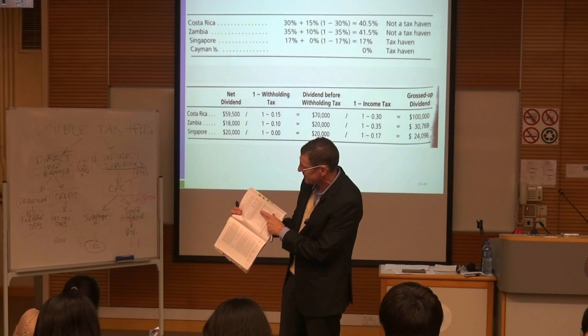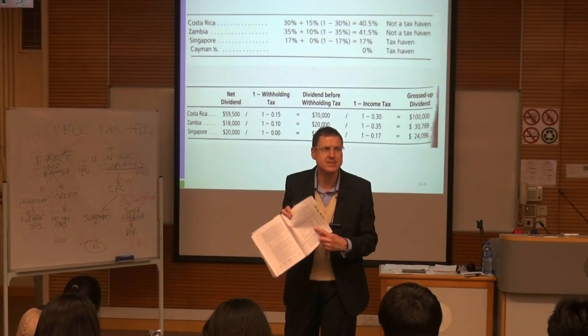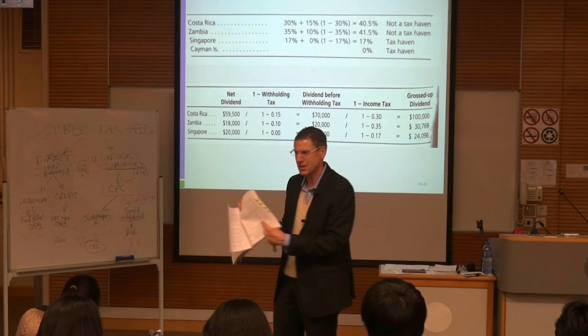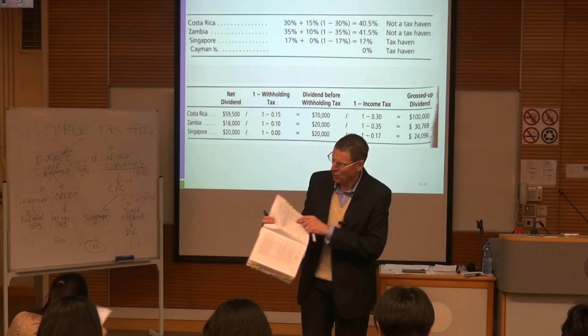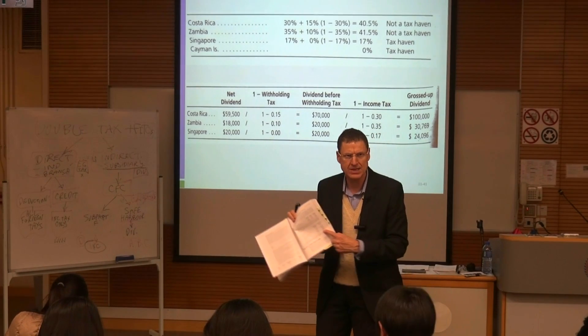Notice what you've got with passive income is the amount coming from the Cayman Islands. You see no tax credit, right at the bottom, zero tax credit.